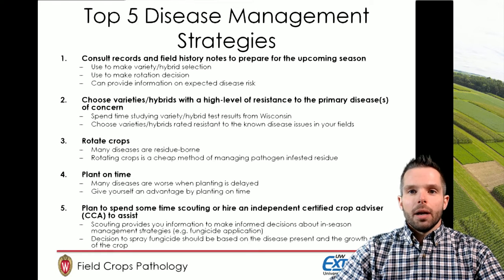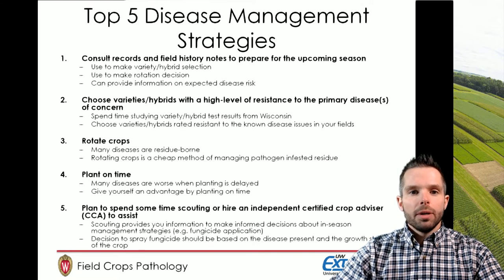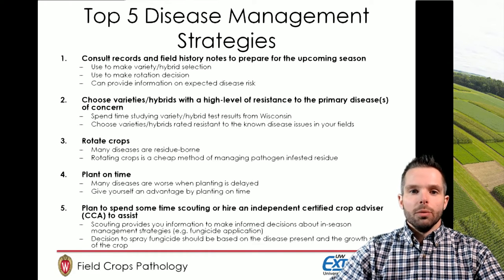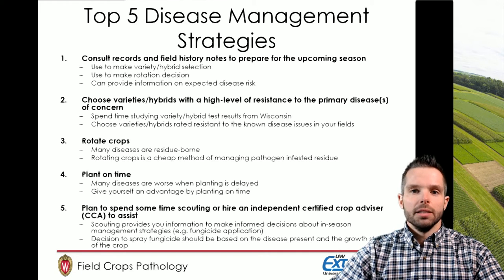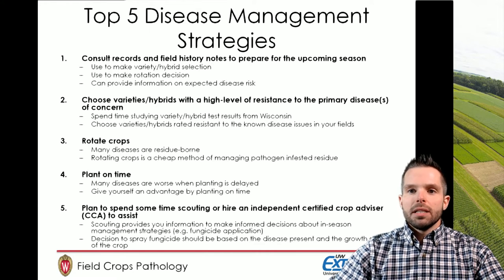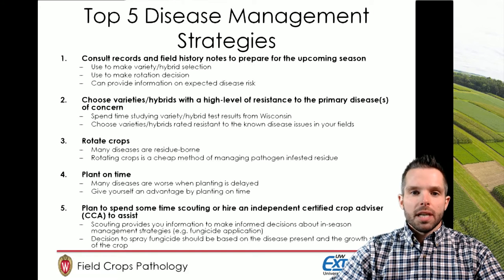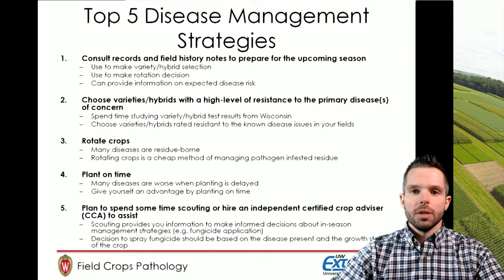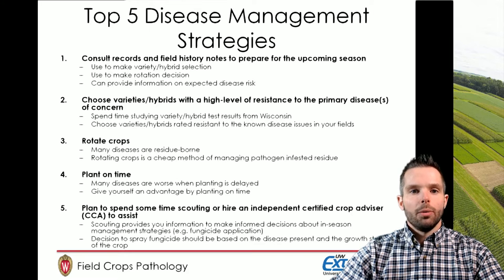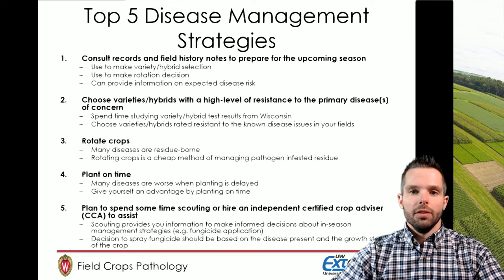The second point is that choosing the right variety or hybrid for your particular location with a high level of resistance is a really cheap way to reduce the amount of disease you might see in a field. Spend some time studying the variety and hybrid test results from the state of Wisconsin, then choose varieties or hybrids that are rated well for the particular diseases you know you have in your fields.